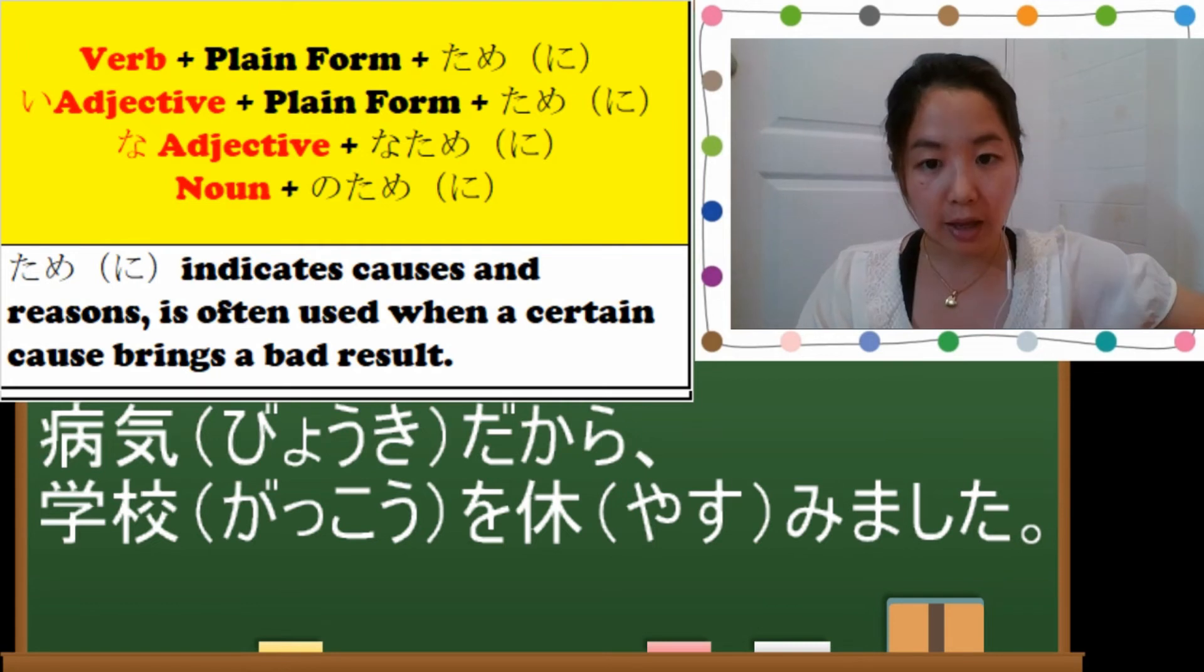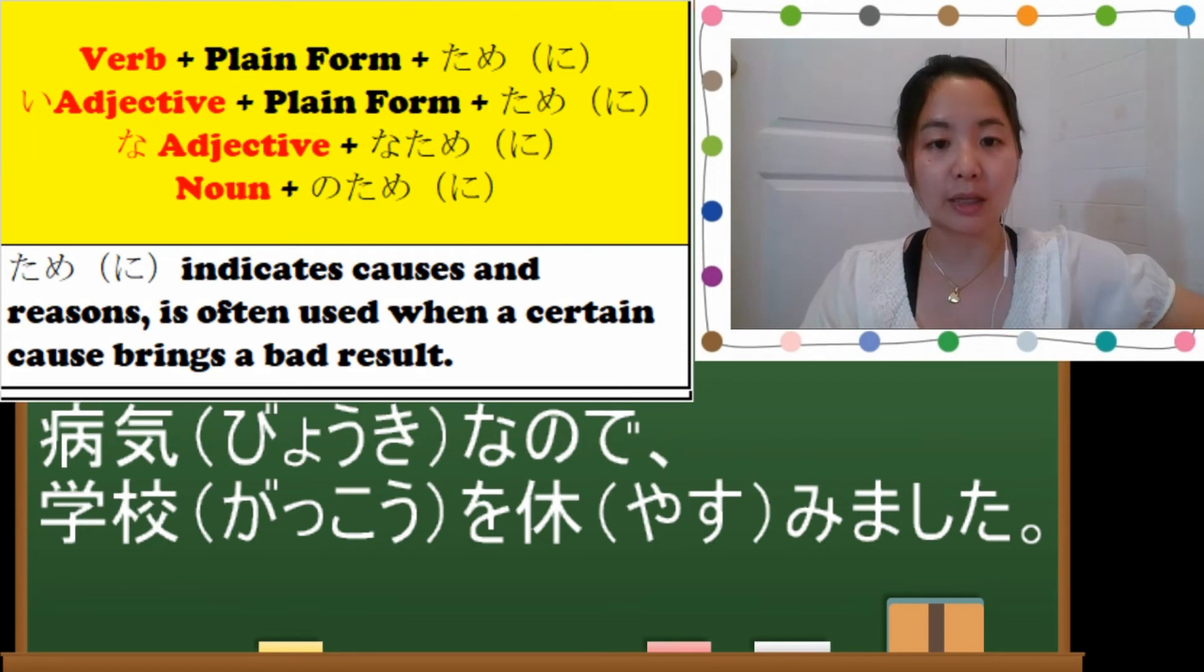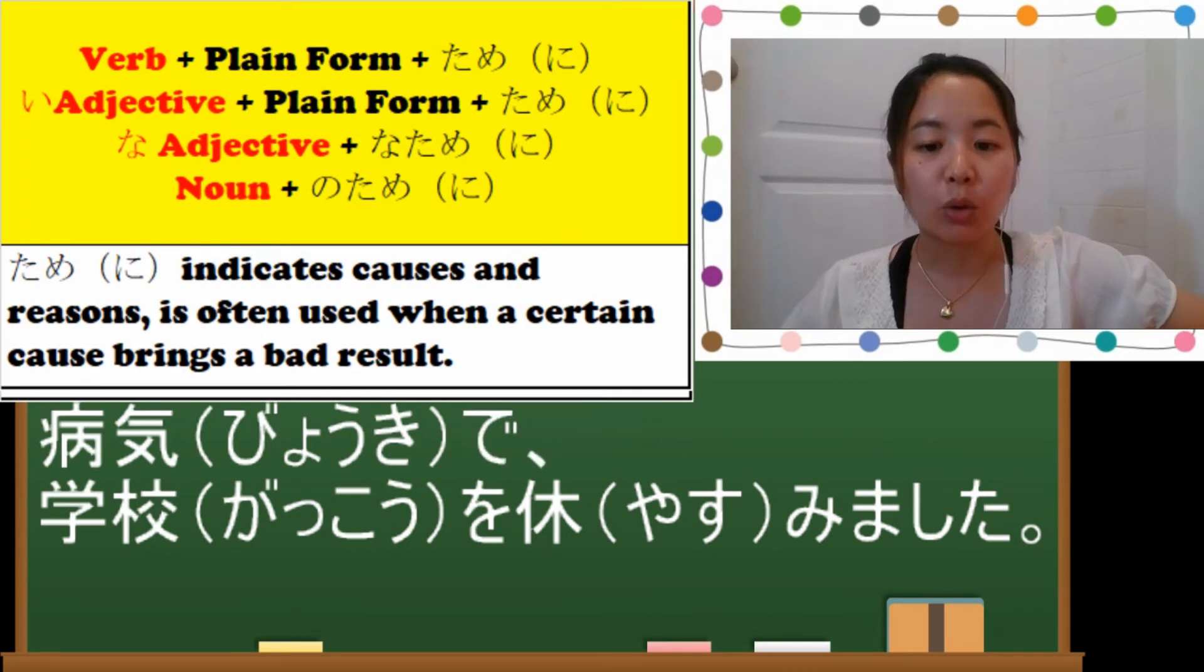If it's node it becomes byouki na node gakkou wo yasumimashita. And the last one, if it's noun plus de, it becomes byouki de gakkou wo yasumimashita.